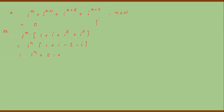Now, find the value of iota⁵ + iota⁶ + iota⁷ + iota⁸ + ... + iota^23. We use the fact that the sum of any 4 consecutive powers of iota is 0. So our target is to make groups of 4 consecutive terms. We are given powers from 5 to 23.